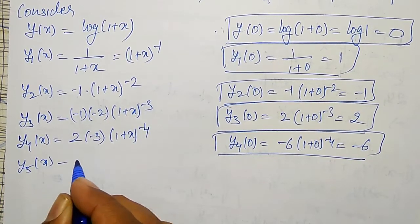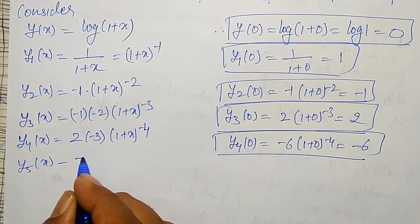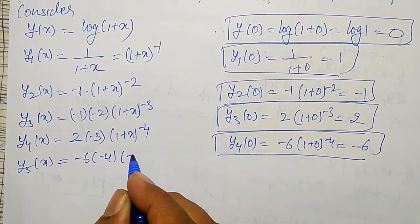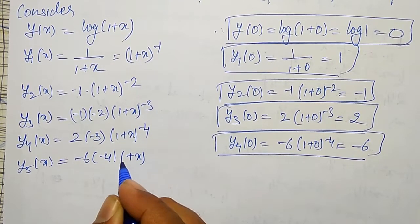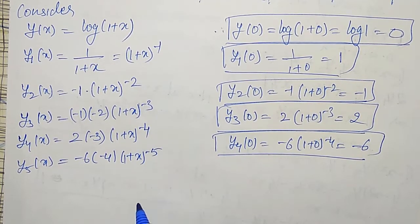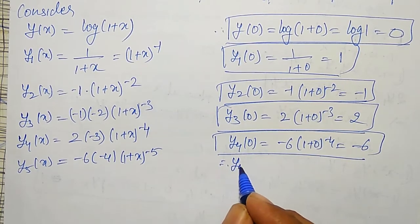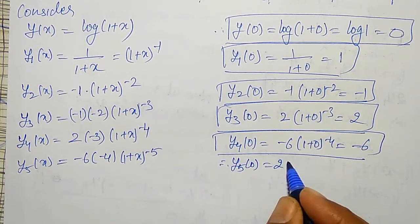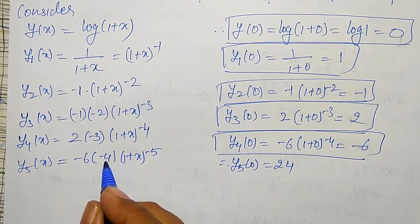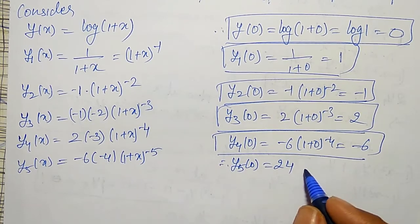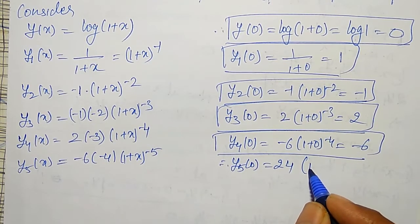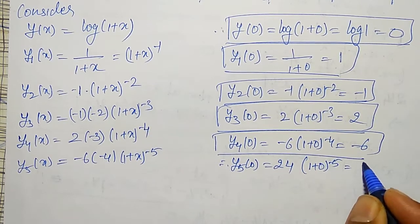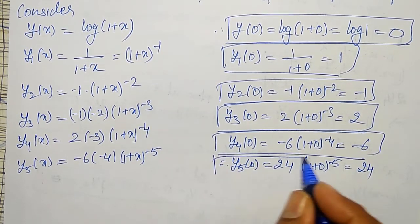And y₅(x) = -6·(-4)·(1 + x)⁻⁵. Therefore y₅(0) = 24·(1 + 0)⁻⁵ = 24.